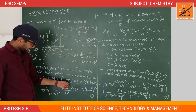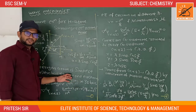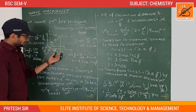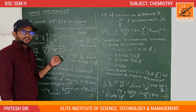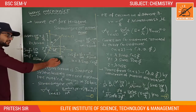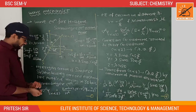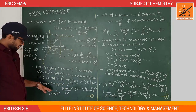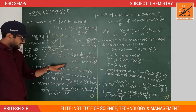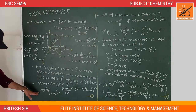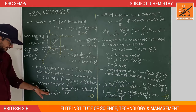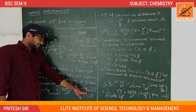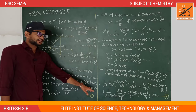In the particle-in-a-3D-box model we assume the potential energy inside the box is zero, but in this case the potential energy is not zero. So the Schrödinger equation for the hydrogen atom is: del-squared ψ(x,y,z) plus (8π²m / h²)(E − V)ψ = 0.